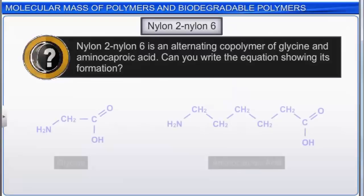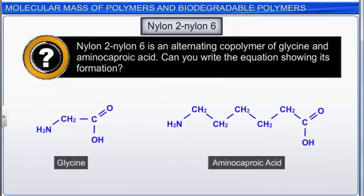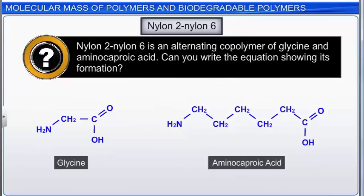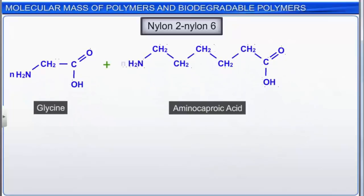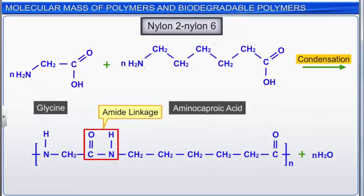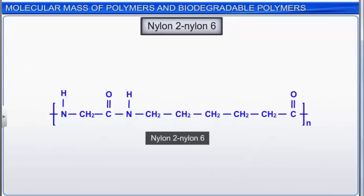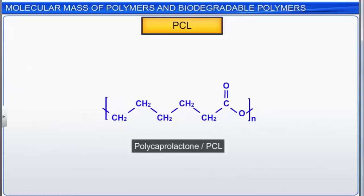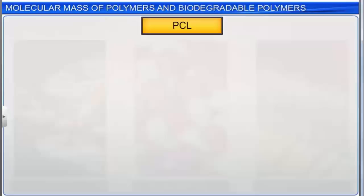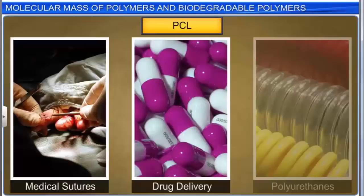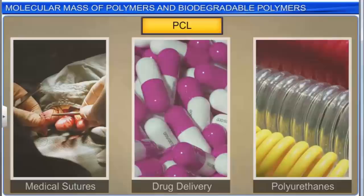Nylon-2-nylon-6 is an alternating co-polymer of glycine and amino-caproic acid. These monomers form an amide linkage by condensation. Notice how the polymer has a 2-carbon group and then a 6-carbon group in the repeating unit. Nylon-2-nylon-6 is a biodegradable polymer. Another biodegradable polymer is poly-caprolactone (PCL), used for medical sutures, drug delivery, and the manufacture of specialty polyurethanes; it has even more applications when blended with other polymers.